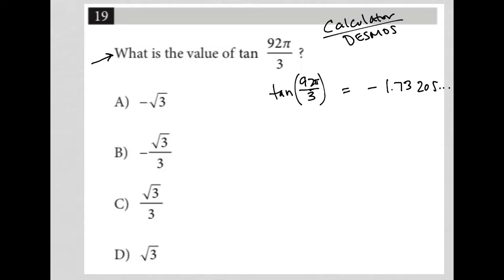One thing I know is that C and D are gone because those are positive and I know that my answer is negative. So when I check answer choice A, I plug negative square root 3 also into Desmos. And what I get from that is that that's equal to negative 1.73205, right? The exact same thing as what I had here. And that's how I know choice A is the correct answer.